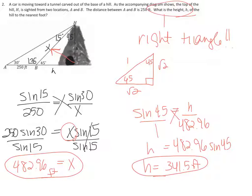So first, to solve this triangle I need this measurement. I have a straight line here, so 180 minus 45 gives me 135, and adding all the angles and subtracting from 180 gives me 15 up at the top. That gives me the Law of Sines: sine of 15 over 250 equals sine of 30 over x — and I solved for x. For the second part, once I know x I have a right triangle: sine of 45 equals H over x, cross-multiplying gives H equals x times sine 45. So I get the height of the hill.